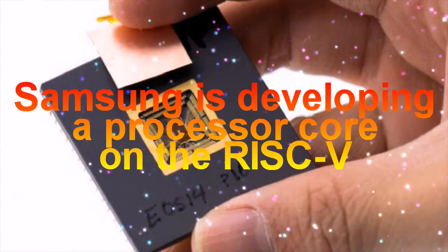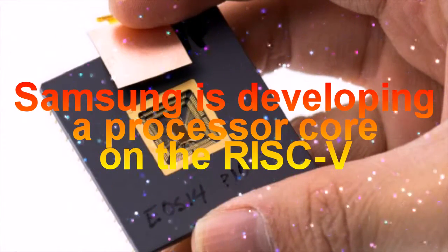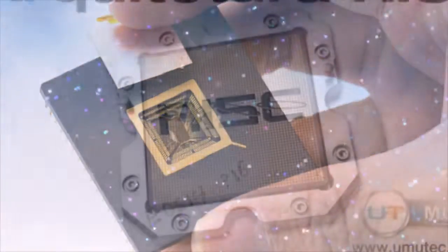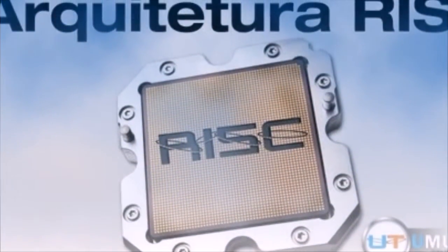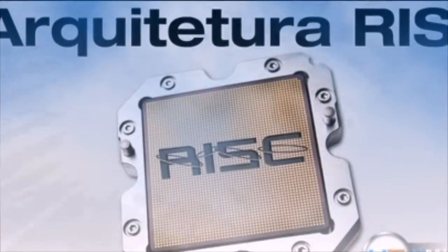Samsung is developing a processor core on the RISC-V. The South Korean giant Samsung, according to network sources, designs its own cores for microchips designed to be used in wearable gadgets and IoT devices.